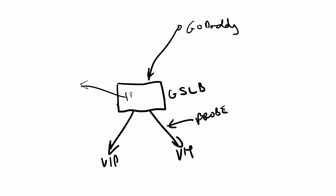For example, let's say data center one and data center two each have VIPs — one active, one standby. The GSLB probes those VIPs using something like an HTTP GET or custom scripts, similar to regular load balancer health checking. If the VIP in data center one doesn't respond, the GSLB starts returning the IP address of data center two, thereby directing clients to the other data center. That's the core concept of GSLB — intelligently probing before sending back an IP address.